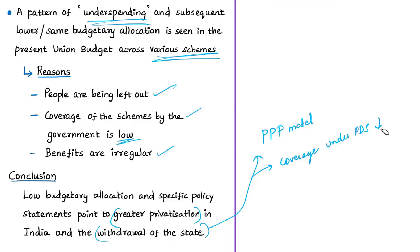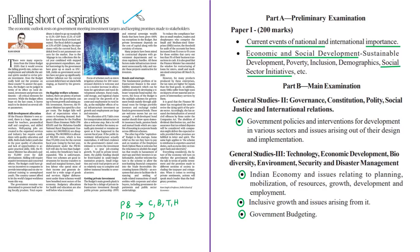Moving to the next editorial, which is also critical of the union budget. The author of this editorial judges the budget in terms of its effects on rural demand, investment, and public sentiments — critical elements for India's economic recovery. The author feels the budget offers some hope related to private sentiments only, with less hope for boosting rural demand and investment.